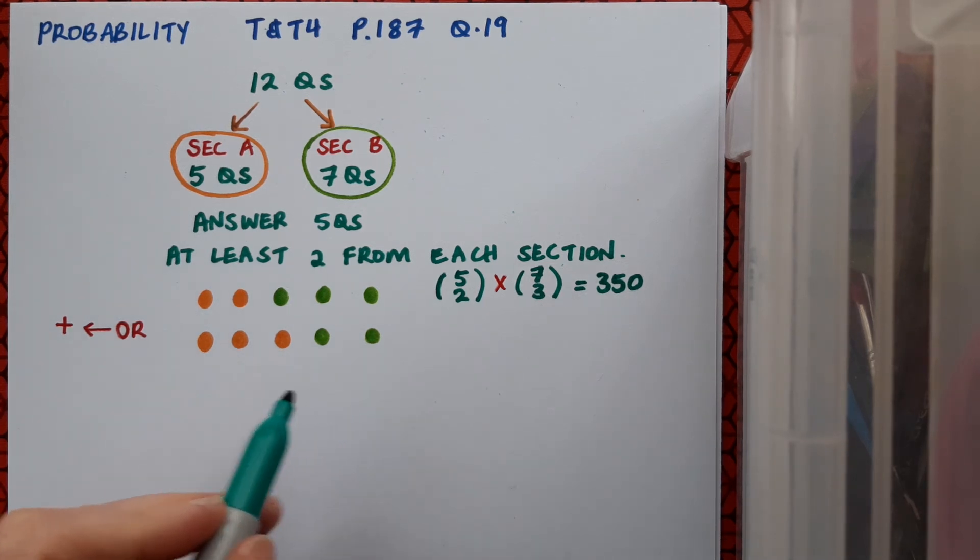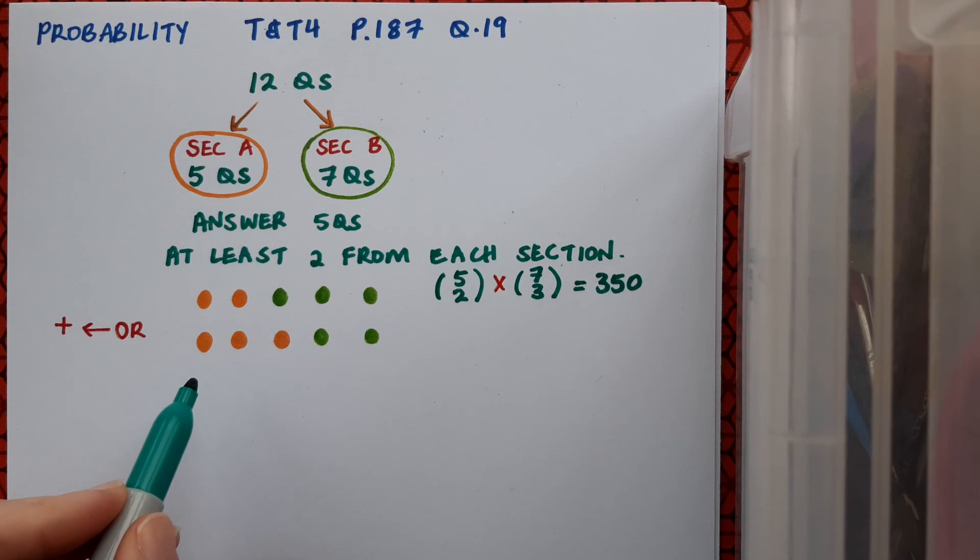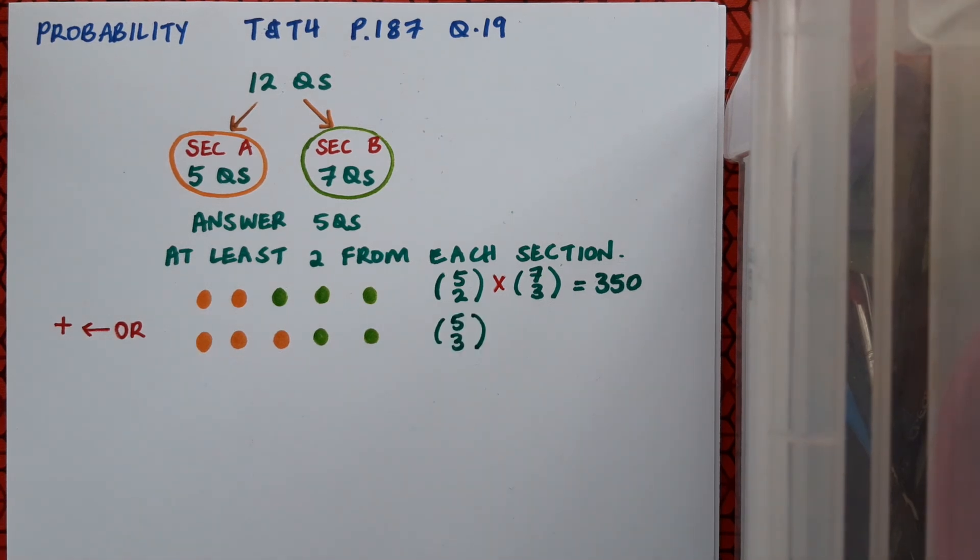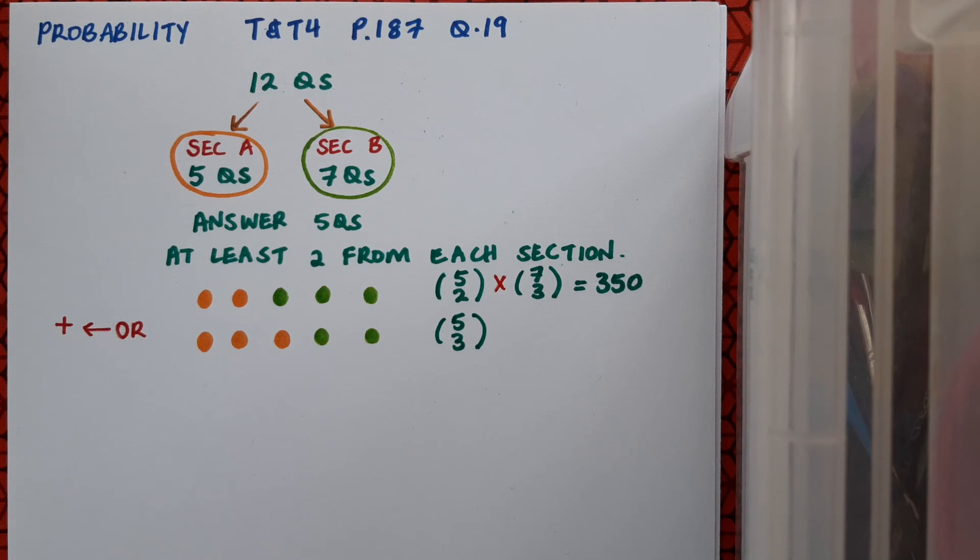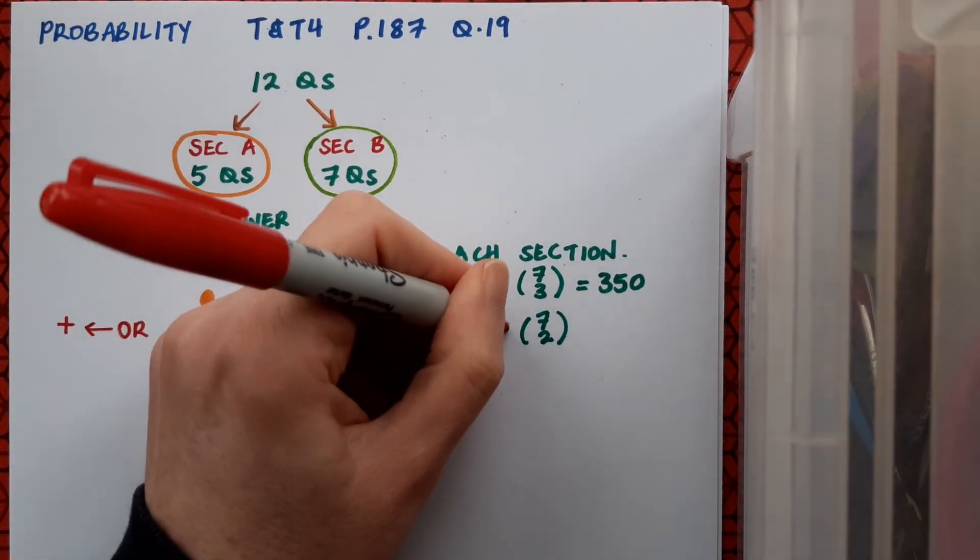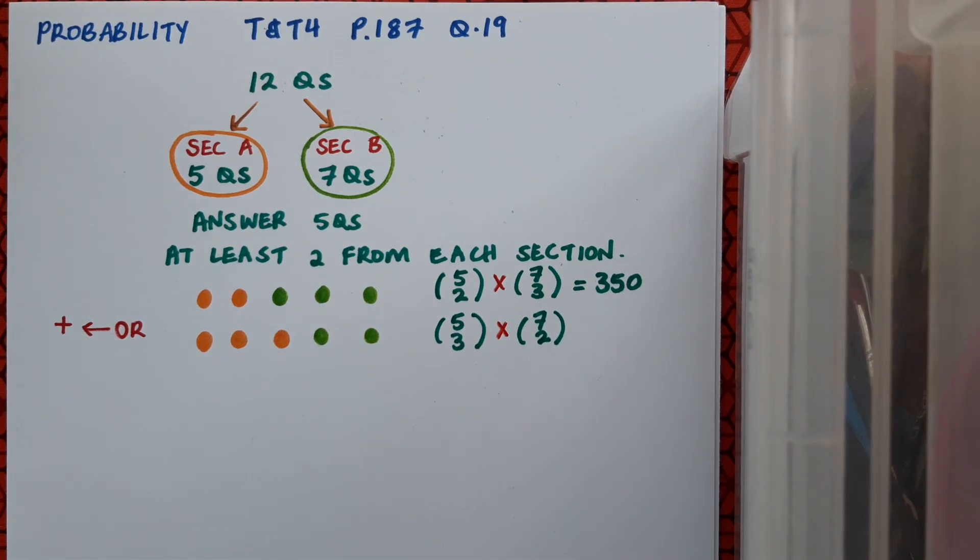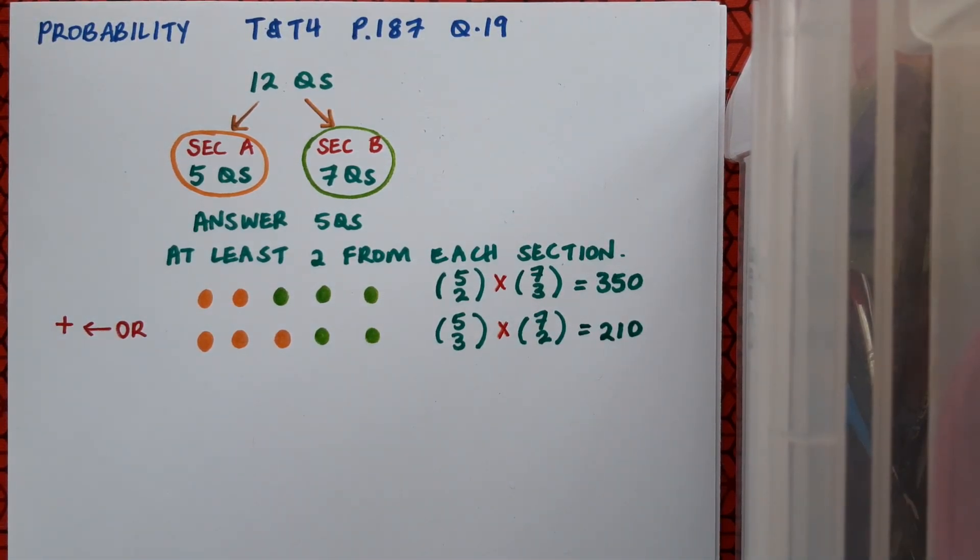Okay, so for this option, I want to choose three from section A. There are five questions to choose from, so I'll calculate 5 choose 3. Then I've got seven questions in section B and I want to choose two of those, so that's 7 choose 2. I need the three questions from A AND the two from B, so I'm going to multiply those together. Off to the calculator, and we find there are 210 possible ways of doing it that way.